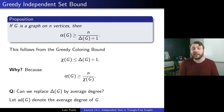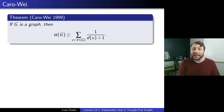Can we do this? The answer is yes. This follows from the following theorem of Karo and Way, independently proved in 1999. The theorem says that if G is a graph, then alpha(G) is at least the sum over vertices v of 1 over (degree(v) plus 1). So this works with the individual degrees of the vertices.